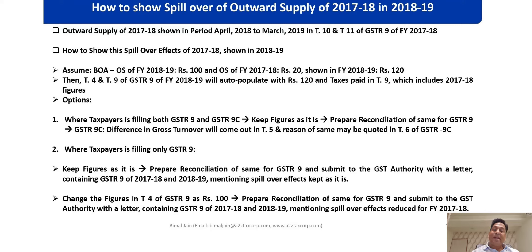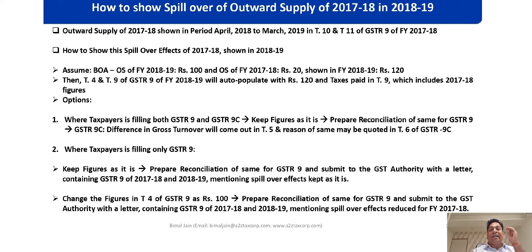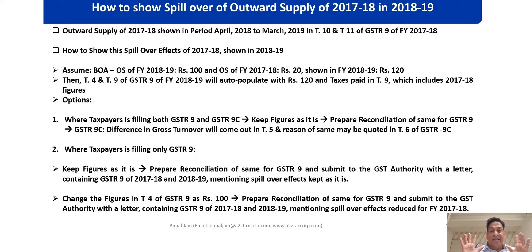Second option: you may reduce this 20 rupees in Table 4 of GSTR 9 of 18-19. Auto-populated 120 reduced by 20 pertaining to 17-18 gives you 100. Accordingly, you prepare a reconciliation showing that you have reduced 20 rupees of 17-18 shown in April 18 to March 19. That reconciliation needs to be attached with a letter. Here also, I suggest you submit a letter to your jurisdictional officer with a copy of GSTR 9 of 17-18 and a copy of GSTR 9 of 18-19.